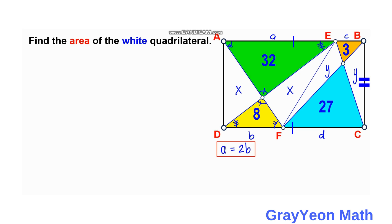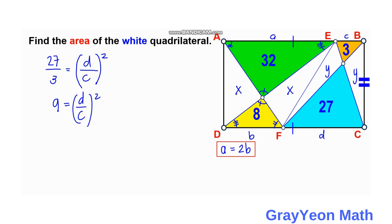Next we compare the blue and orange triangles. For the blue we have 27, and for the orange we have 3. The area scale ratio is 27 over 3, which equals 9, and that equals (d/c) squared. Taking the square root of both sides gives 3 = d/c, so d is equal to 3c.